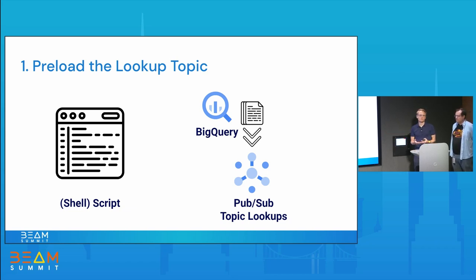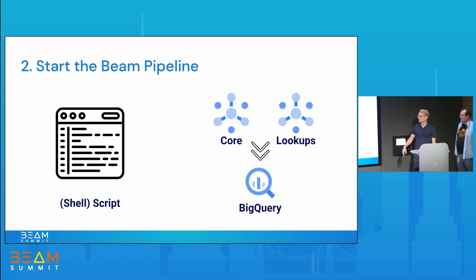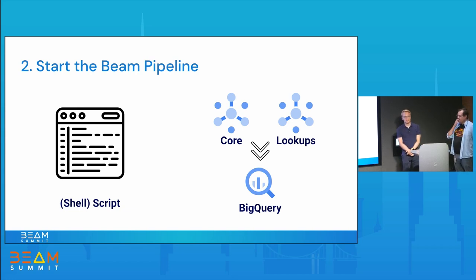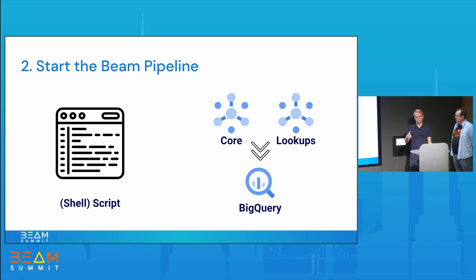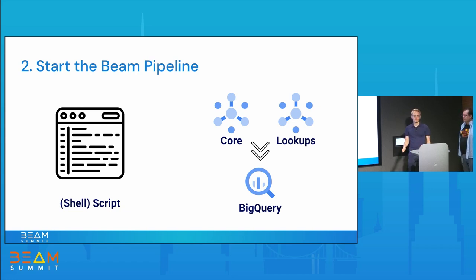Once we have the assumption that everything is available in our streams — that the whole history of the lookups is there — we need to make sure the pattern actually works without needing an external thing like Bigtable. You need to ensure the state fits within the workers. In this case we know it's 30 days: every 30 days, a machine reboots and a new hash ID is published. So we need to keep the lookup around for 30 days, after which we can be sure a new one will arrive and we can clean up the state with garbage collection.